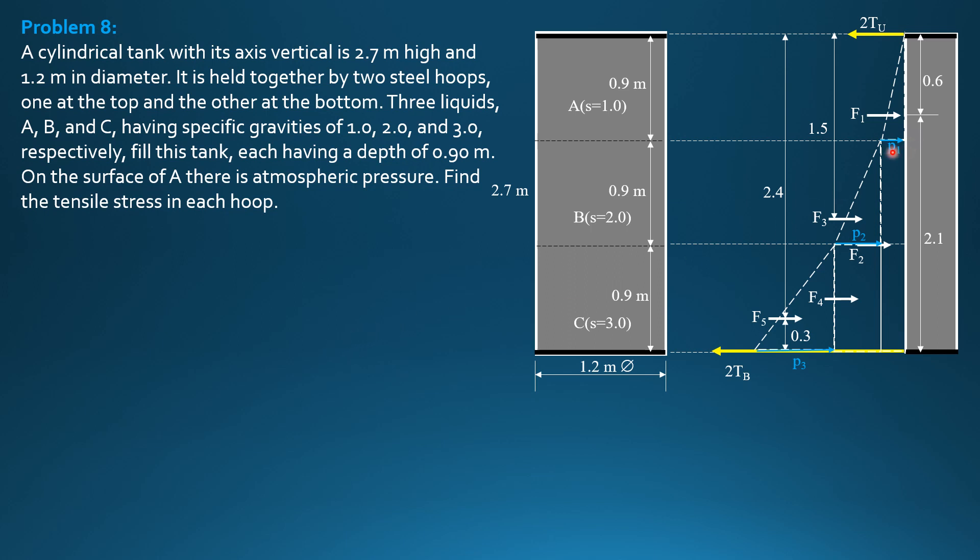So P1 is 1.0, 9.81 times 0.9, or 9.81 times 0.9, 8.829 kilopascals. P2 is 2 times 9.81 times 0.9, and that is equal to 17.658 kilopascals, while P3 is beginning here 0. So 3 times 9.81 times 0.9, and it is equal to 26.487 kilopascals.